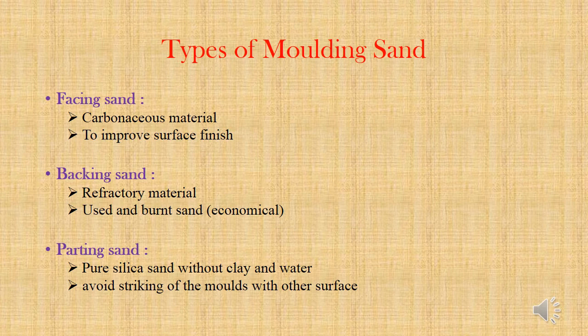Next is packing sand. This type of sand is used in other parts of the mold which will not have direct contact with molten metal. Previously used sand or burned sand can also be used for packing, and this will have refractory materials. Next is parting sand, which is a pure silica sand without clay and water. This will be used along the parting line, which will not allow the molding sand from cope and drag to bond and stick to each other.